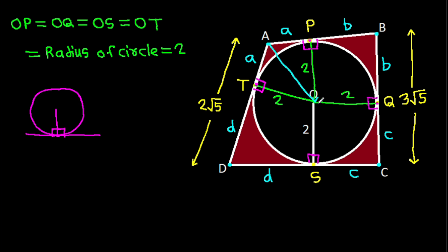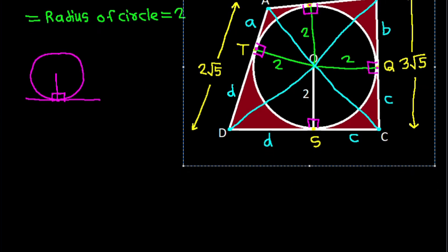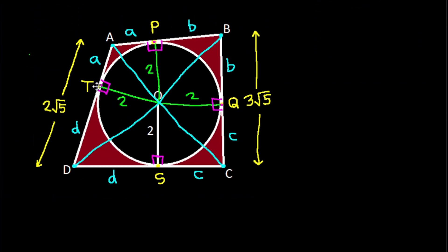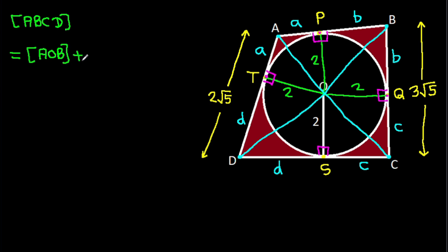Now if we join OA, OB, OC, and OD, the quadrilateral ABCD gets divided into triangles.